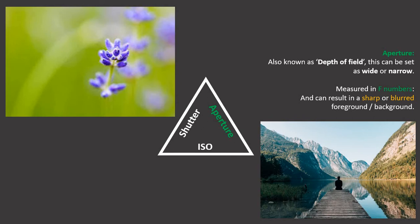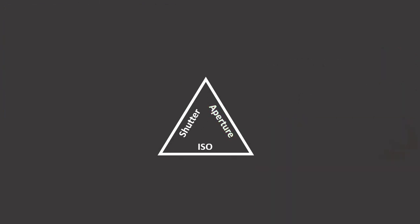The aperture is measured in F numbers. In this macro shot of a small blue flower we can see how a tiny part of the flower is in focus while the background is totally blurred, whereas in the landscape below the setting has gone the other way and it's sharp. It depends what effect you want.